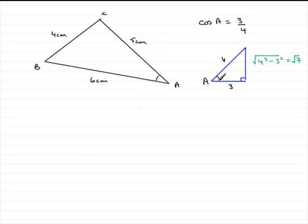So when it comes to working out the sine of A, sine is opposite over the hypotenuse. So therefore, we would have sine of angle A equals the opposite side, root 7 over 4. And that's our exact value.